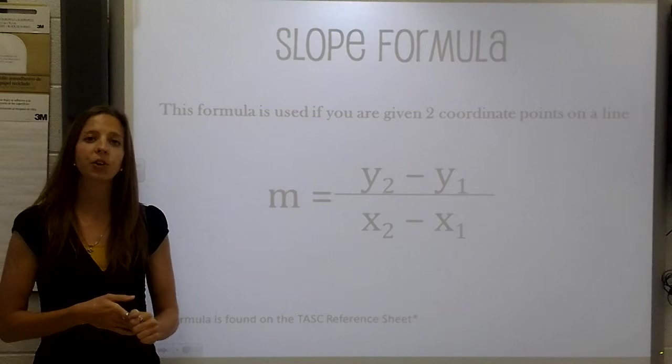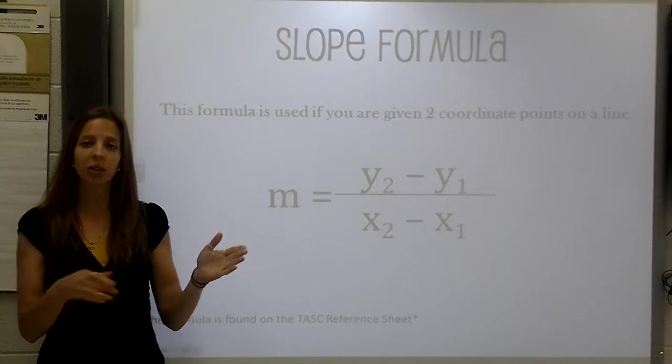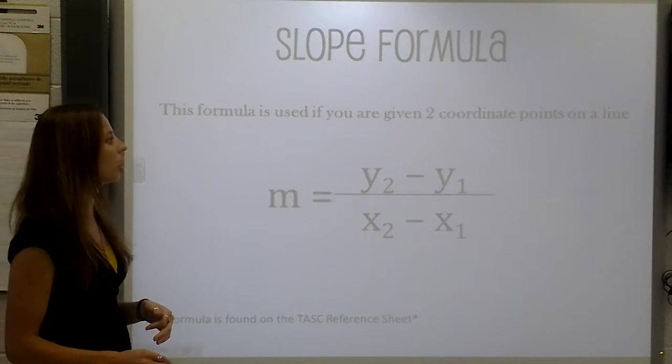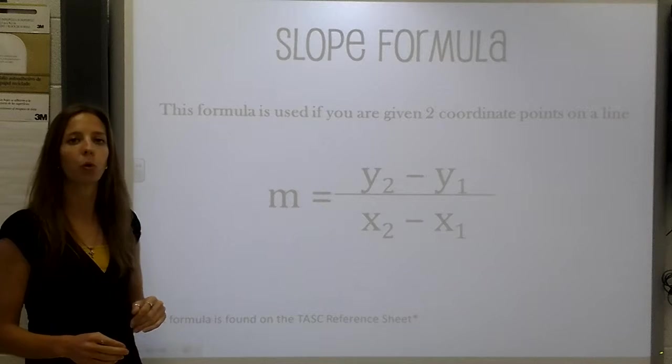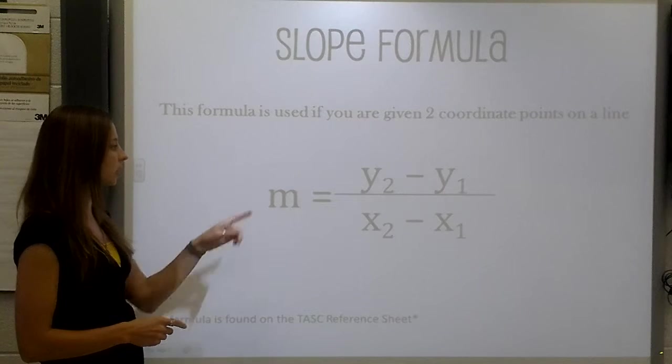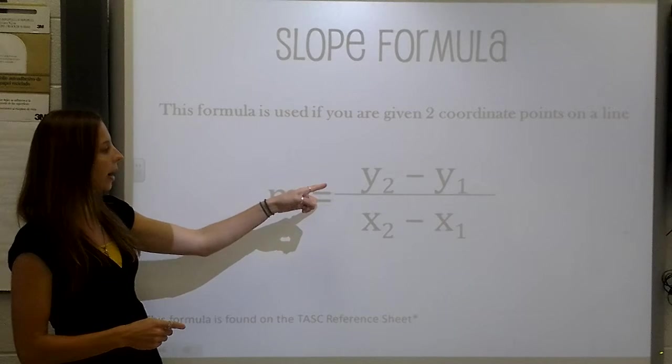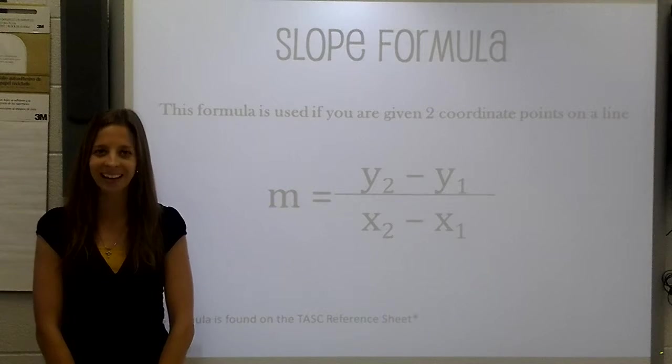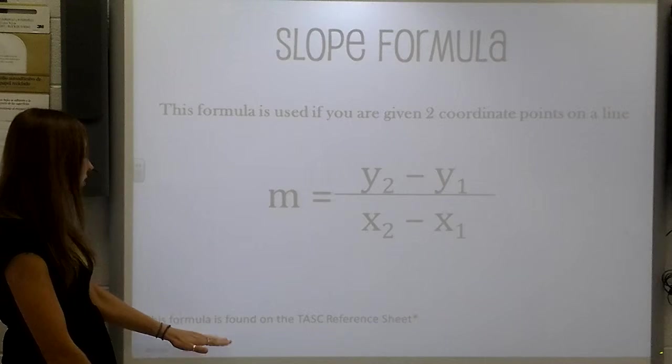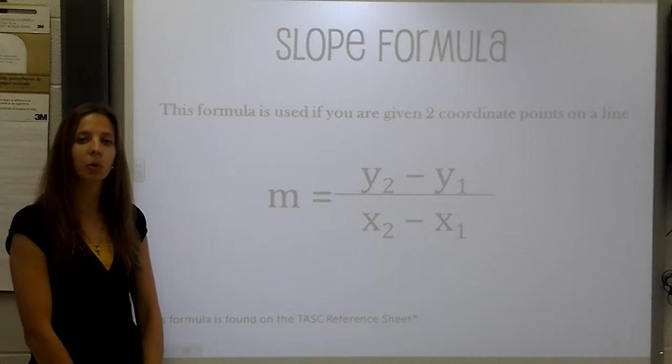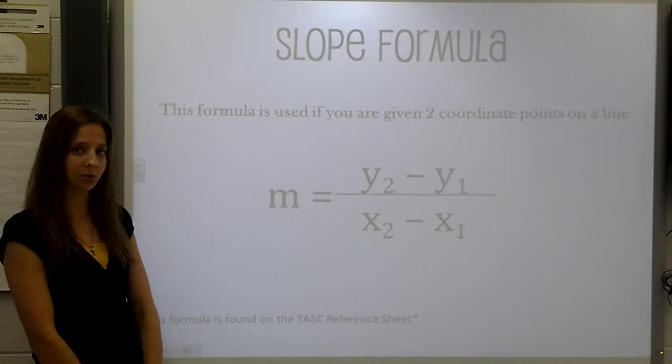Now, if you are not provided with the line actually on a graph, you can also solve for slope as long as you are given 2 coordinate points on a line. The formula that you will use is slope equals y2 minus y1 over x2 minus x1. You can also find this formula on the task reference sheet. So it is not a formula that you need to memorize.